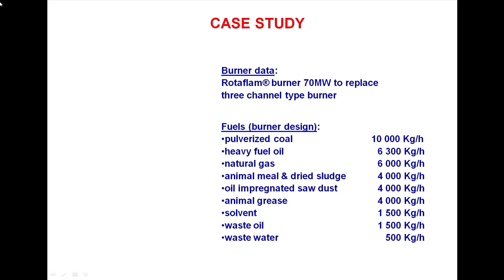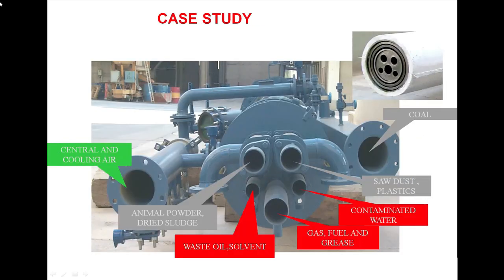Case study burner data: 70 megawatt generator, replacing a 3-channel type burner. Fuels used: central and cooling air, animal powder, dried sludge, coal, sawdust, plastics, contaminated water, gas, and fuel and grease — as shown in the figures.